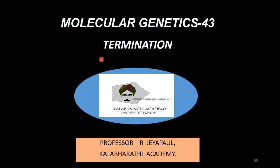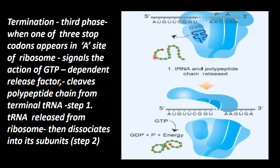Amino acids in a similar sequence form the polypeptide chain. The termination phase is the third phase of protein production, and there are different types of protein produced.